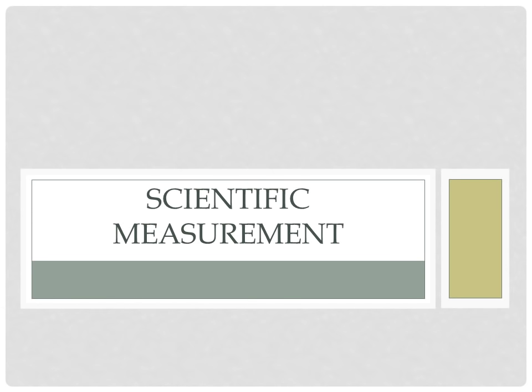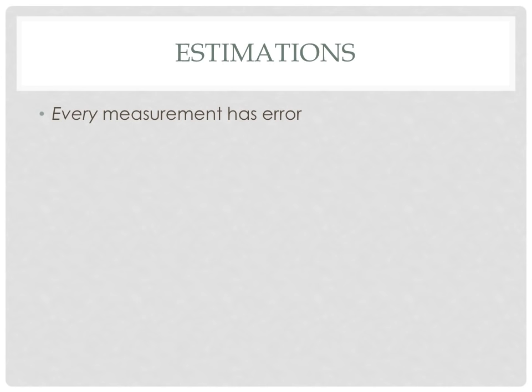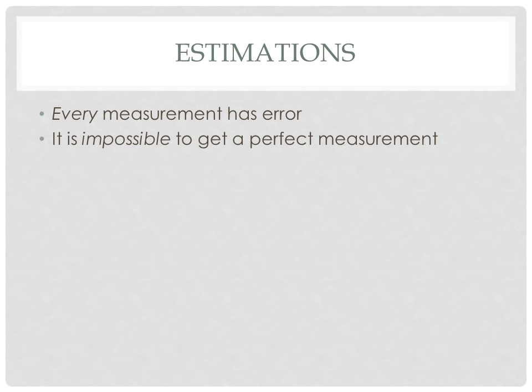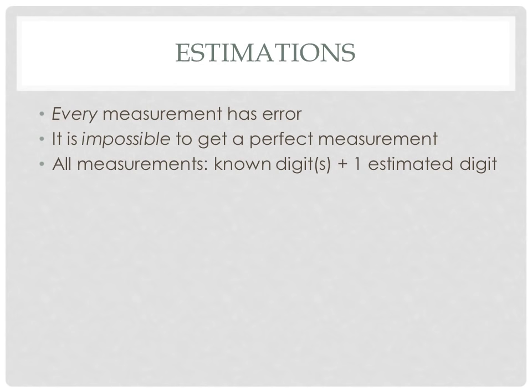This video is on scientific measurement. As we will see in our measurements, every single measurement has error. In other words, it is impossible to get a perfect measurement. Regardless of how expensive the measuring instrument is, there is no such thing as a perfect measurement. The reason why is that every measurement always includes an estimated digit.